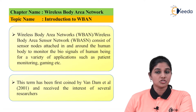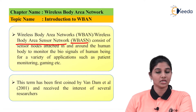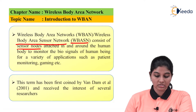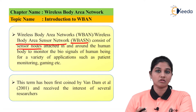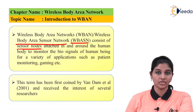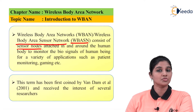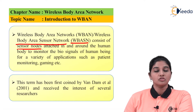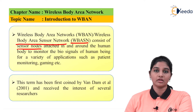Wireless body area network, which is also called wireless body area sensor network, is represented as WBAN or WBASN. It consists of sensor nodes which are attached in and around the human body for detecting the biosignals of the human being. Those biosignals can be used in a variety of applications, especially in the field of medical. They can be used for measurement of vital parameters which include blood pressure, heart rate, brain signals and other signals. This wireless body area network has major applications in the area of medical and health sector.